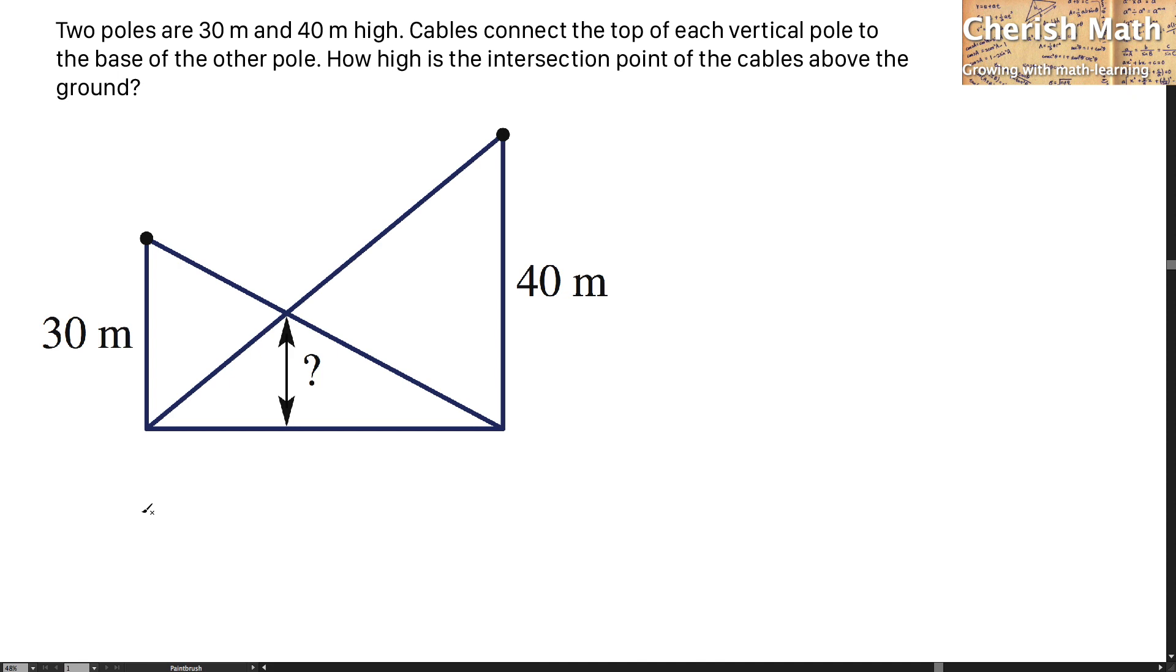An assumption here has to be made that the pole and the ground is at right angle. And now let's make two similar triangles here that I label in blue.